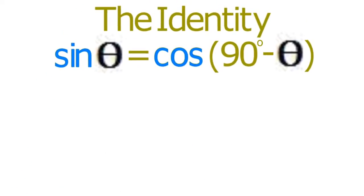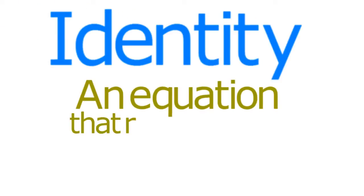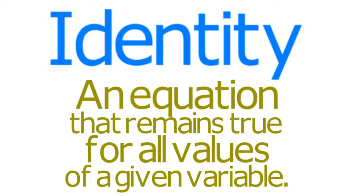This connection is expressed in the identity the sine of theta equals the cosine of 90 degrees minus theta. As you may remember, an identity is an equation that remains true for all values of a given variable.